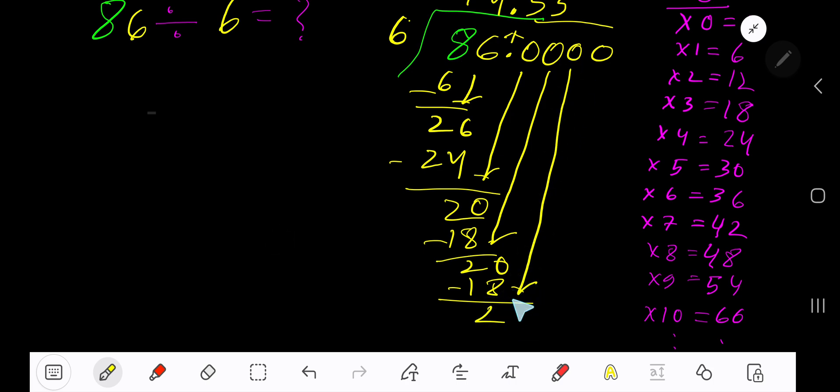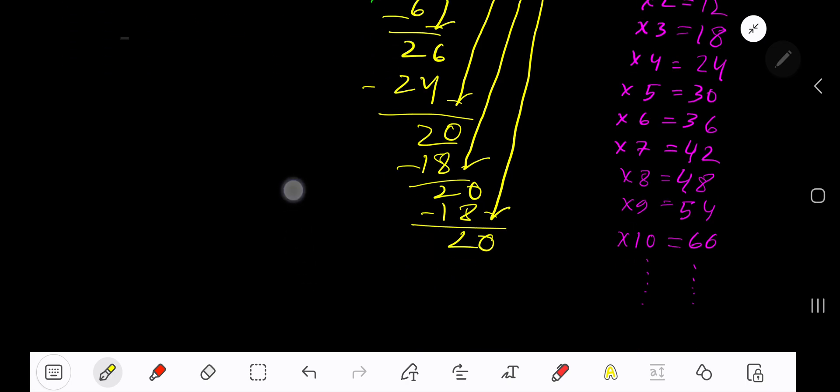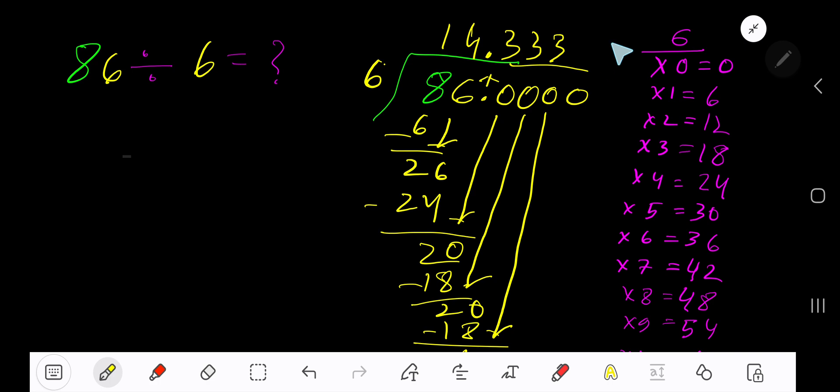Bring down another zero. You can bring down more zeros, but since we have gotten three places of the decimal, now place here three dots. So 14.333 dot dot dot is the answer. You can write your answer placing a bar over 3. This means that this 3 is repeating.